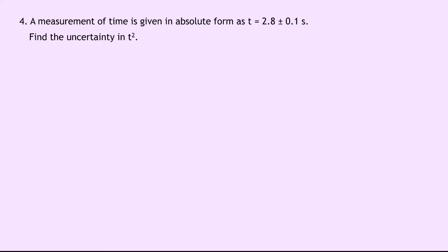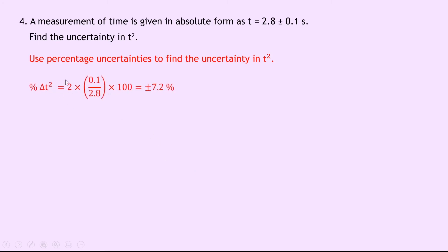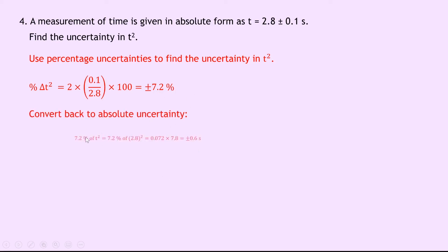Question 4 says a measurement of time is given as t equals 2.8 plus or minus 0.1 seconds. Find the uncertainty in t squared. Using percentage uncertainties, the percentage uncertainty in t squared equals the power 2 times the uncertainty in t over t, which is 0.1 over 2.8 times 100, giving plus or minus 7.2%. Converting back to an absolute uncertainty, we take 7.2% of t squared: 0.072 times 2.8 squared which is 7.84, giving plus or minus 0.6 seconds. So t squared equals 7.8 plus or minus 0.6 seconds.